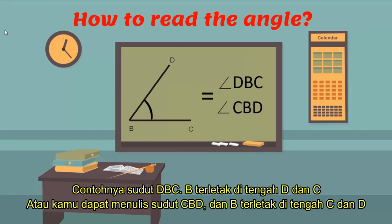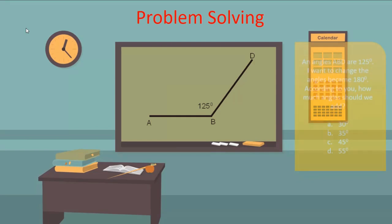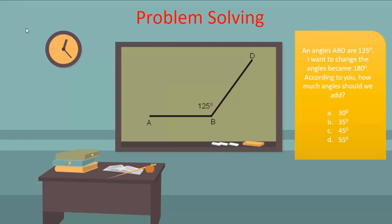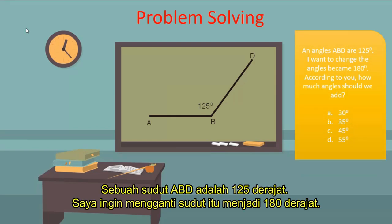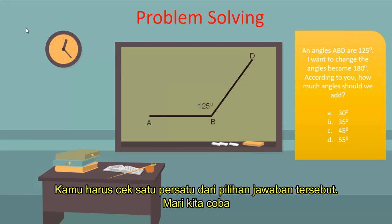Look at the picture. Angle ABD is 125 degrees. I want to change the angle to become 180 degrees. According to you, how many degrees should we add? There are four choices, and you must try them one by one to get the answer. Let's try it.